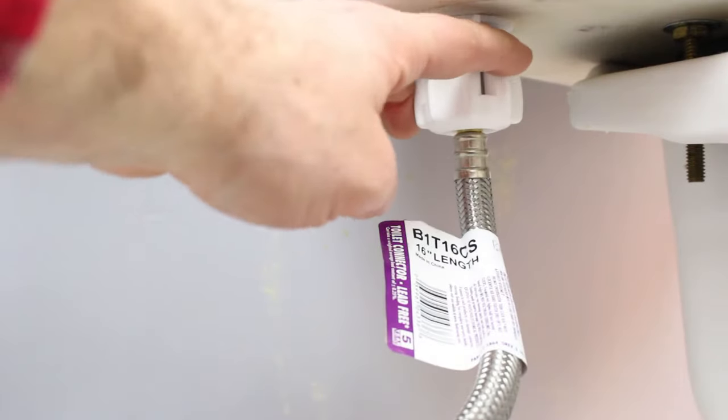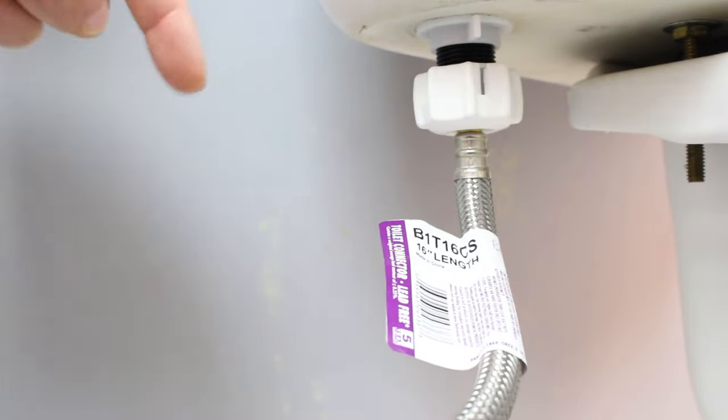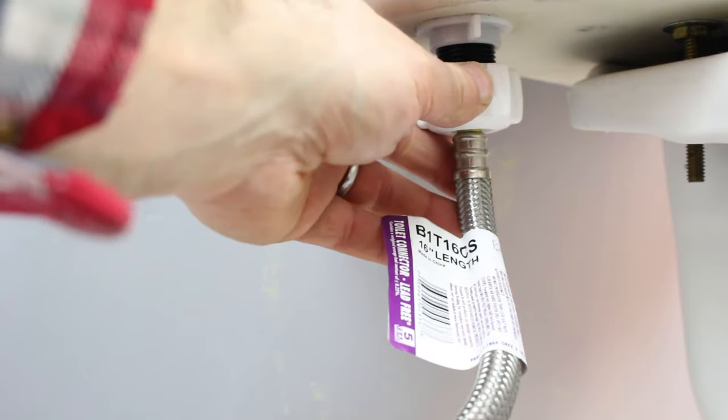And then all you need to do is turn the water back on at the shutoff valve. And then finally, you just want to check and see if there are any leaks at this point and down at the shutoff valve, and they're not. So we're good to go.